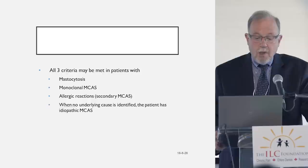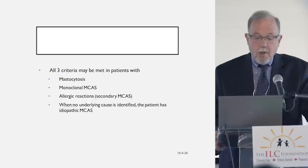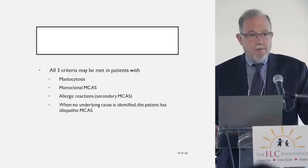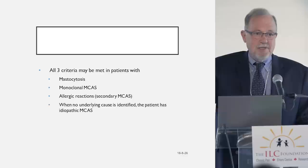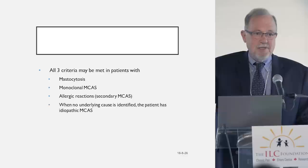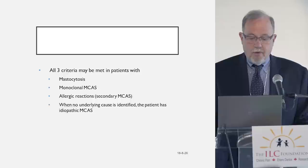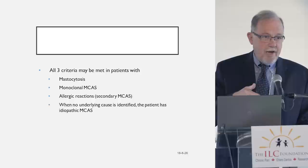Those three criteria can be seen in people who have systemic mastocytosis, and that's where the confusion arises. People will look at the Mastocytosis Society website where it lists those symptoms and say, 'That's me — I must have systemic mastocytosis.' But that's not the case, because there are other reasons somebody can have the exact same symptoms: they can have allergic reactions for a host of reasons, or they can have that form of idiopathic mast cell activation syndrome related to POTS or EDS.